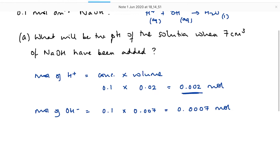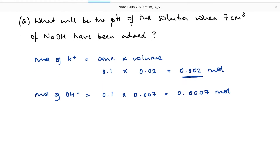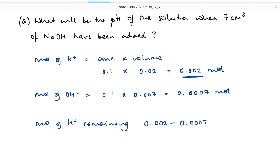So how many hydrogen ions have been neutralised? Moles of hydrogen ions remaining — not all of them have been neutralised; I haven't yet added enough hydroxide ions. We've got 0.002, and because it's a one-to-one ratio I can just take one from the other, and that's 0.0013 moles.